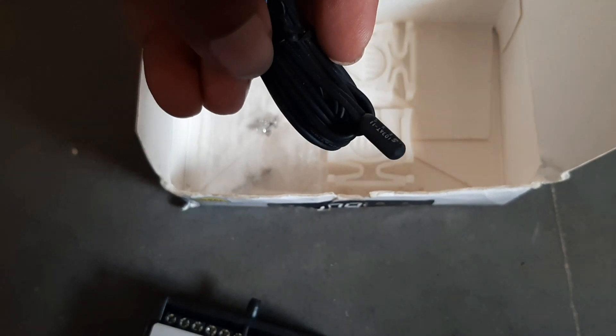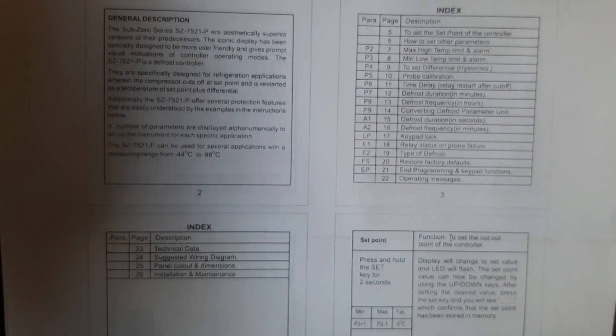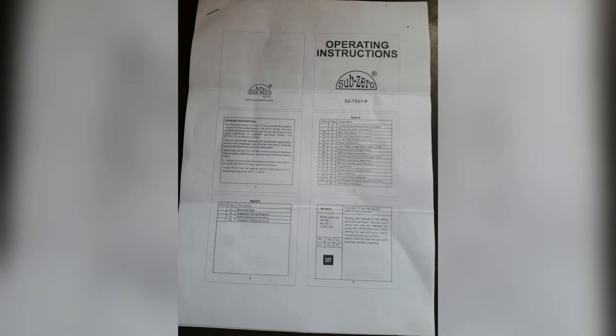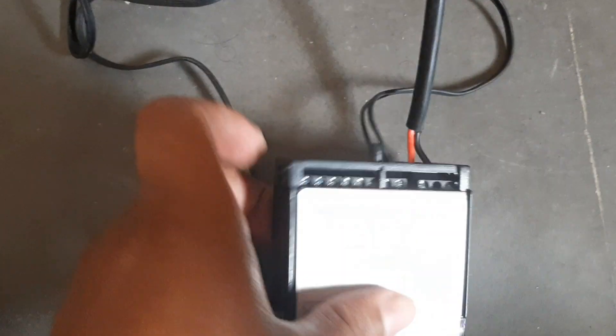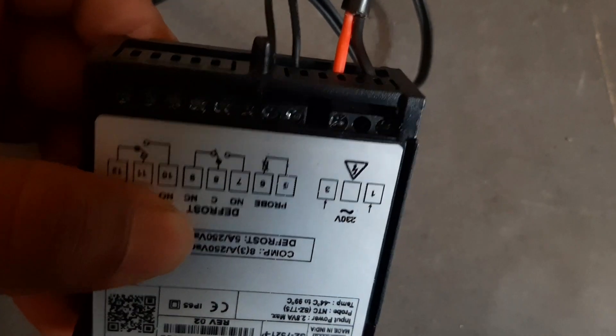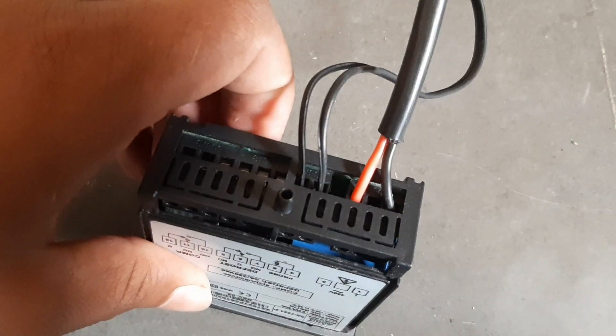This is the temperature sensor, and this is the operating manual with parameters. The probe is connected at terminals 5 and 6. Here you can see the probe connected temporarily at pins 1 and 3, and the supply is 230 volts.